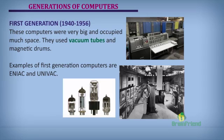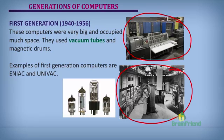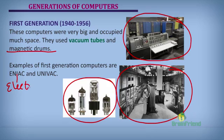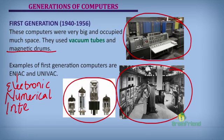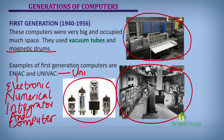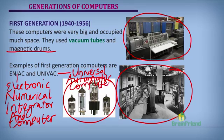First generation computers were very large and could occupy a whole room. They used vacuum tubes and magnetic drums. Examples are ENIAC — Electronic Numerical Integrator and Computer — and UNIVAC — Universal Automatic Computer.